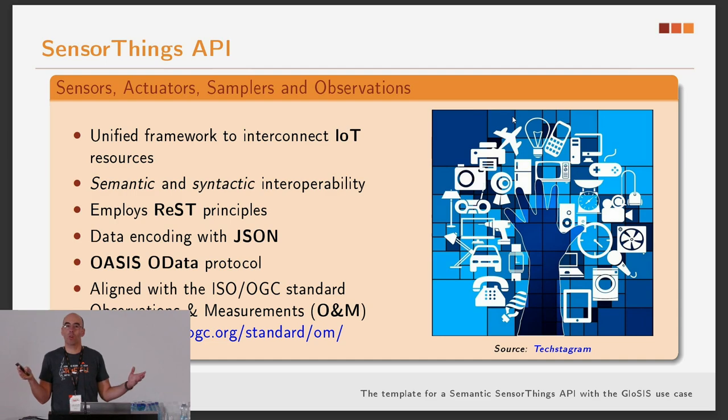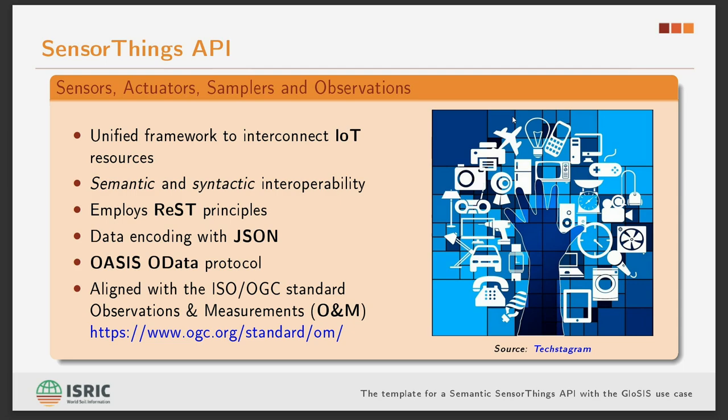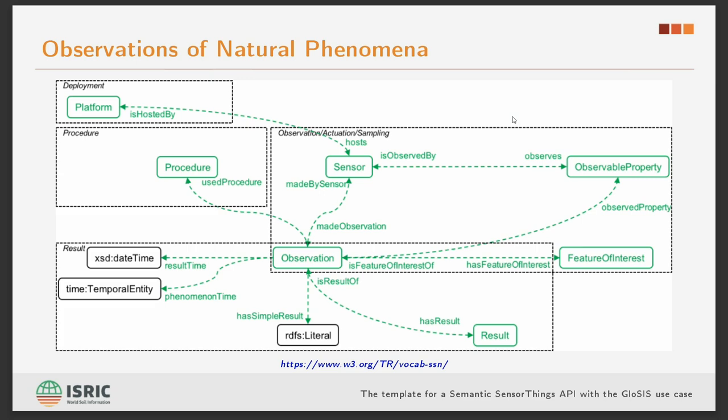Observations and Measurements, for those that don't know, basically gives a conceptual structure to your data, directed at general observation of natural phenomena — again, linking to the presentation by Daniele. This was 2016–2019. The W3C then published an ontology called SOSA, which you can see here. In this ontology you have concepts such as observation, procedure, feature of interest, and observable property. For those working in the context of INSPIRE, none of this should be unfamiliar.